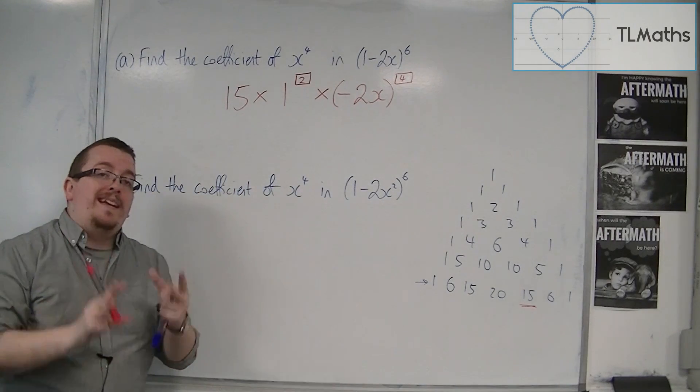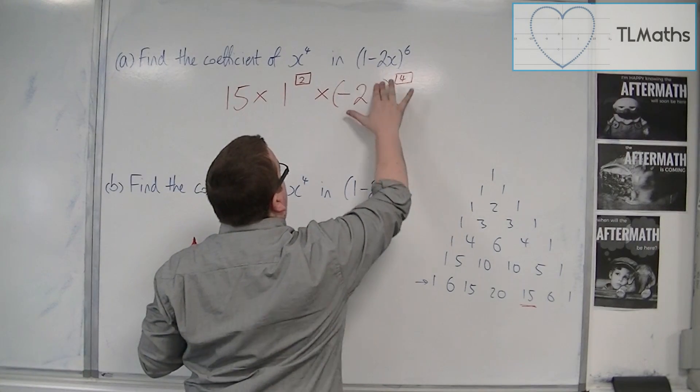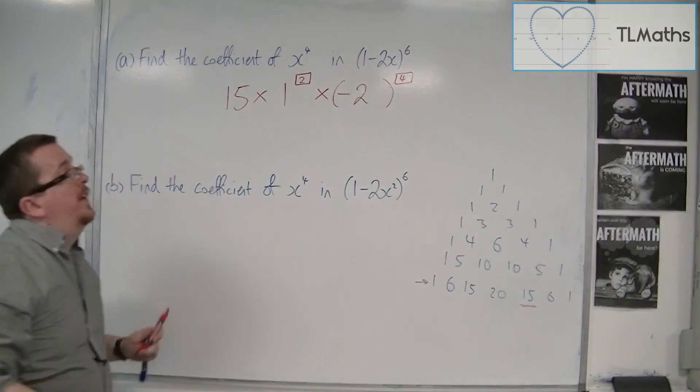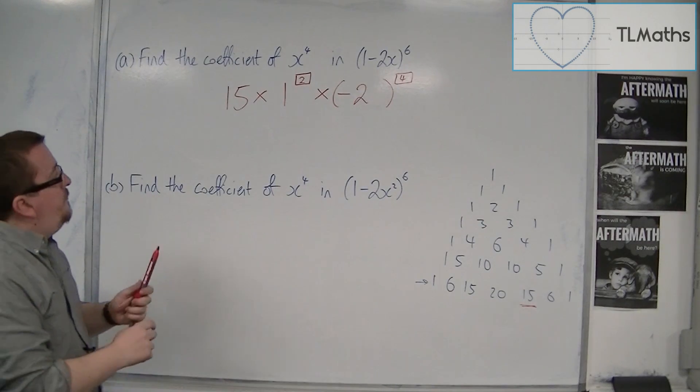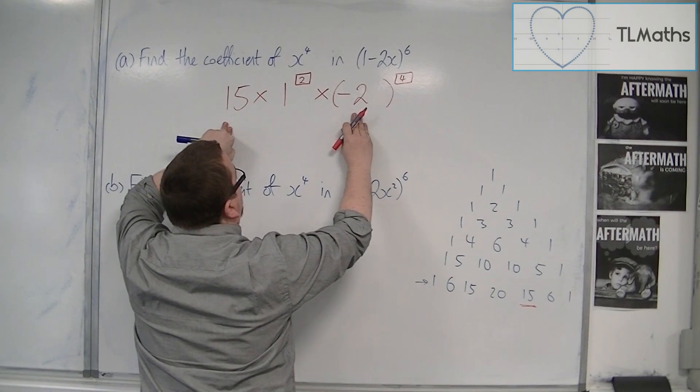Now because we're looking at just the coefficient, I don't want to have the x there. So I'm going to get rid of the x and I'm just going to have what I've got left over. So I've got 15 times 1 times minus 2 to the 4.